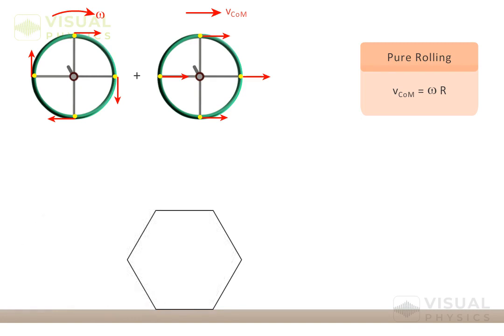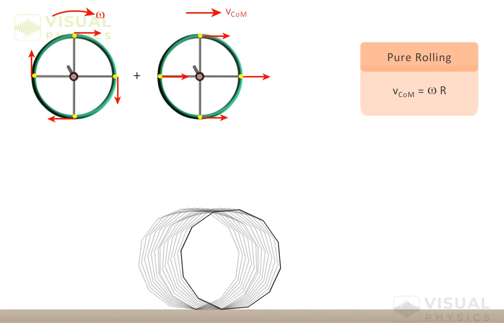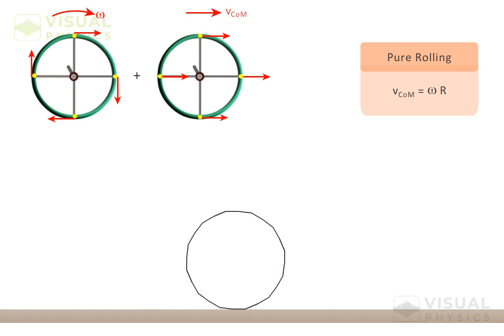Now if we increase the number of sides of our object, then the point of contact will change more frequently. But the instantaneous velocity of the point of contact remains zero. Increasing the number of sides to an extent that it becomes a round object, we can say that though its point of contact will change every instant, but just for the moment that point is in contact with the ground, its instantaneous velocity is zero.